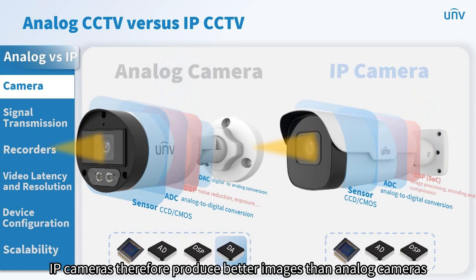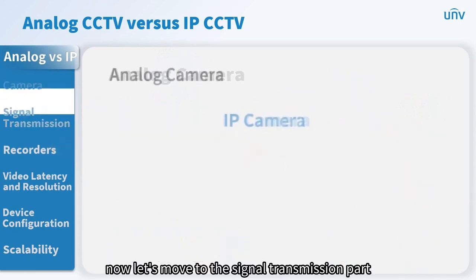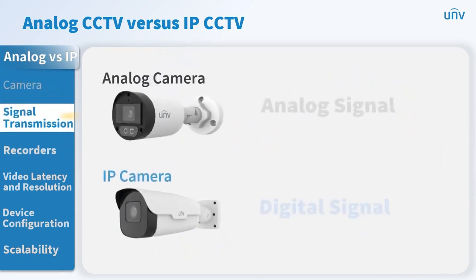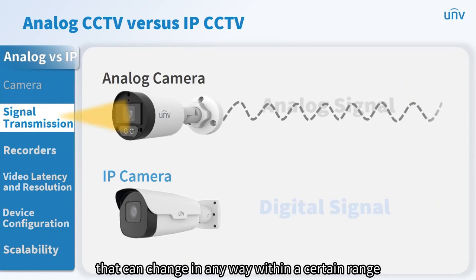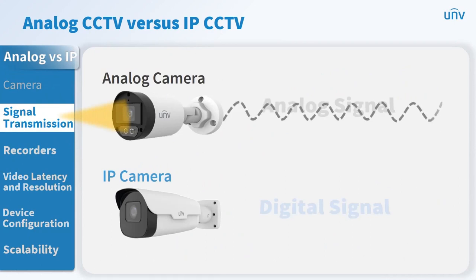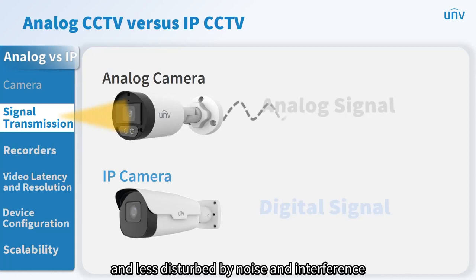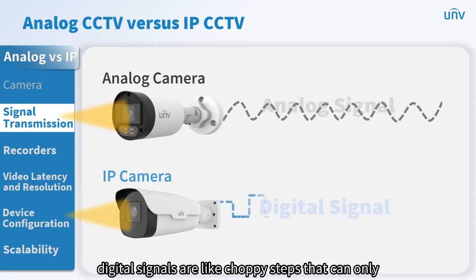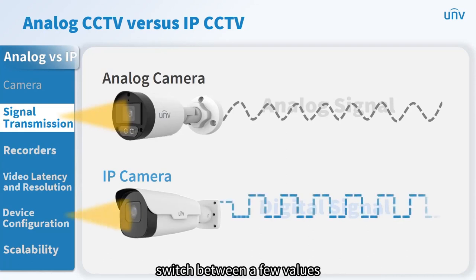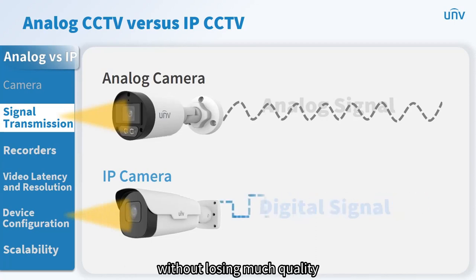IP cameras therefore produce better images than analog cameras, with more advanced chips and less signal loss. Analog signals are like smooth waves that can change in any way within a certain range, making them more secure and less disturbed by noise and interference. Digital signals are like choppy steps that can only switch between a few values, but they can be processed and transmitted without losing much quality.